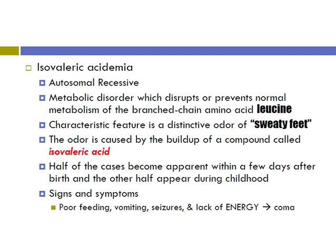Isovaleric acidemia is also autosomal recessive. It is a metabolic disorder which disrupts or prevents normal metabolism of the branched-chain amino acid leucine.